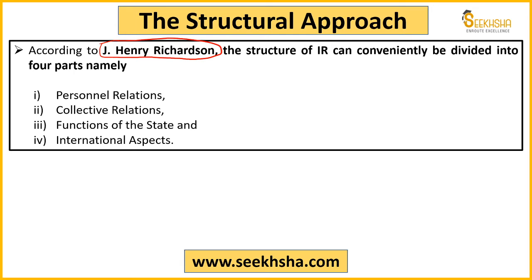Richardson divided this approach into four parts: first, personal relations between employee and employer; second, collective relations and trade union functions; third, the functions and importance of the state; and finally, how international aspects are introduced into industrial relations. We will see how a link establishes personal, collective, state, and international relations.